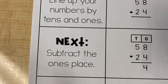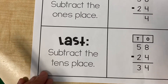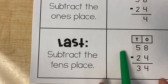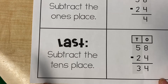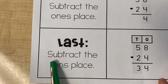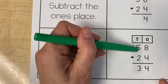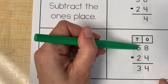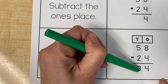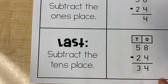Now it is time for us to move on to our tens place. We always move from right to left — always from smallest to largest value of number when we are subtracting. Last, subtract the tens place. Here under the tens column, we see that we have a 5 and a 2. We always move from top to bottom. So 5 minus 2 equals 3. And so the answer to 58 minus 24 is 34.